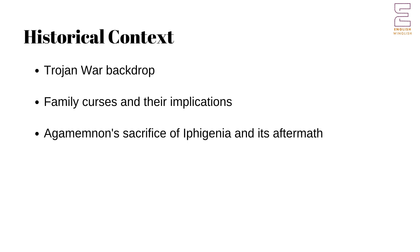Historical Context. Understanding the historical backdrop is crucial to fully appreciating Agamemnon. The play is set against the Trojan War, which began when Paris abducted Helen, leading to a decade-long conflict. The mythological history of the house of Atreus is filled with betrayal and revenge, setting the stage for the events in Agamemnon. The Greeks believed in the power of curses and the inevitability of fate — concepts that heavily influence the play's narrative.